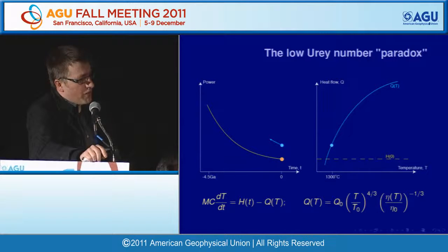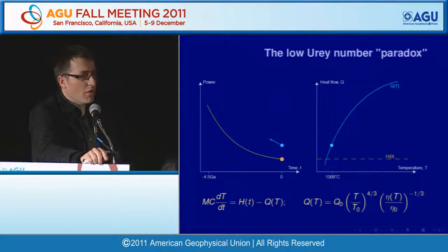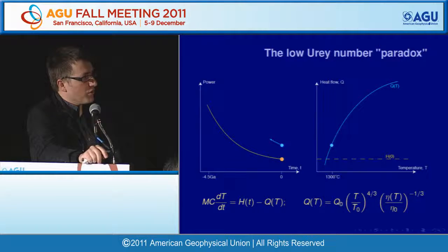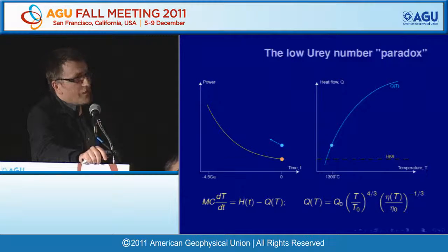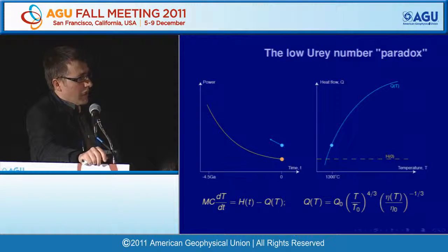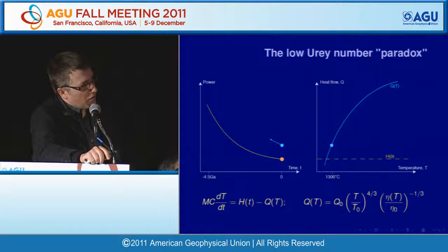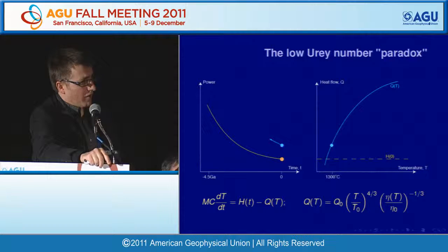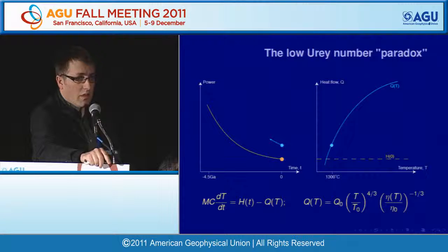The problem of thermal evolution of the Earth is longstanding—sometimes found in the literature as the 'low Urey number paradox' or 'missing heat paradox.' Simply stated, we model thermal evolution using an energy balance: internal energy varies as a function of heat production by radioactivity and heat loss due to surface heat flow. The heat production is easy to compute if you know the concentration of radioactive elements; the heat flow at the surface is controlled by mantle convection.